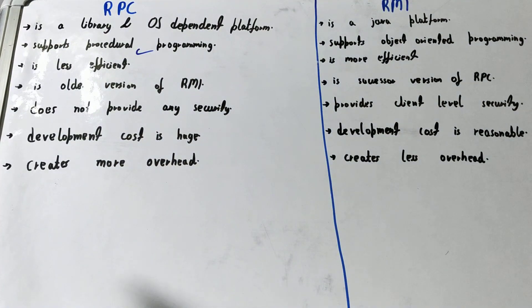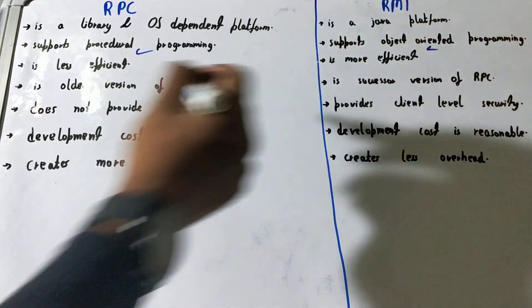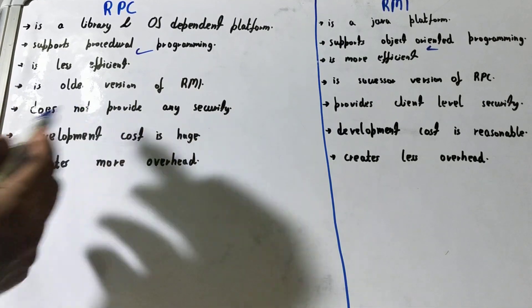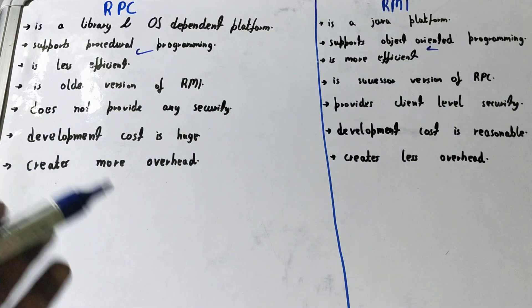RPC is less efficient because it supports procedural programming which doesn't support object-oriented features. RMI is designed for object-oriented programming languages, which makes it more efficient.